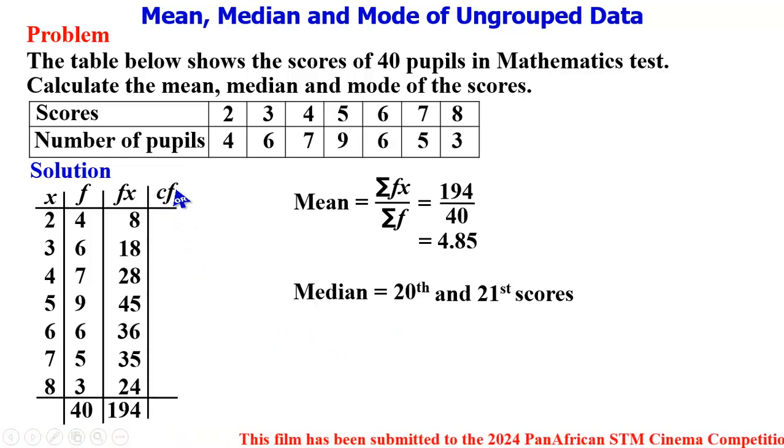How do we calculate the cumulative frequency? As the name implies, we accumulate the frequencies. The first frequency here is 4. We then add this 4 to the next frequency, which is 4 plus 6, giving us 10. This 10 to be added to the next frequency, which is 7, giving us 17. 17 plus 9 gives 26, 26 plus 6 gives 32.